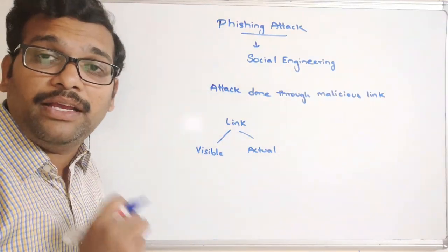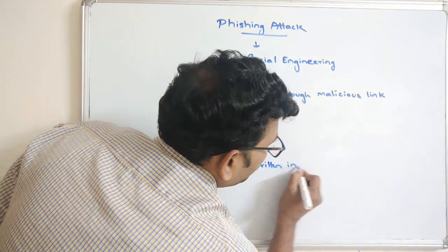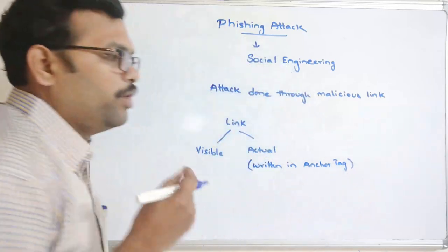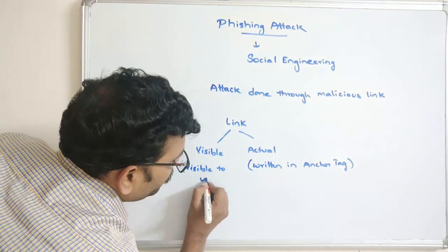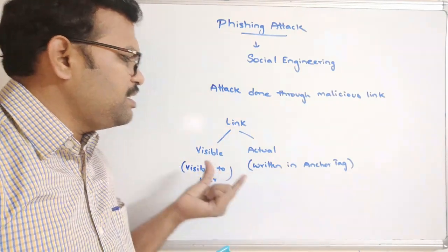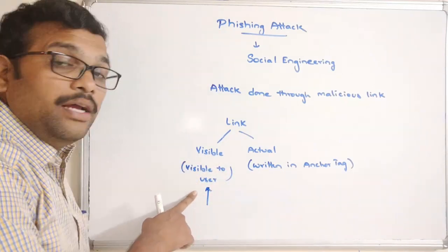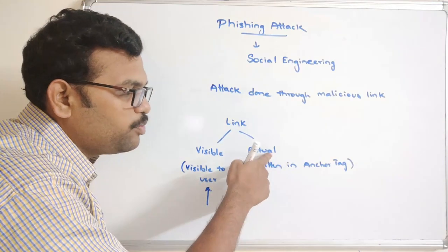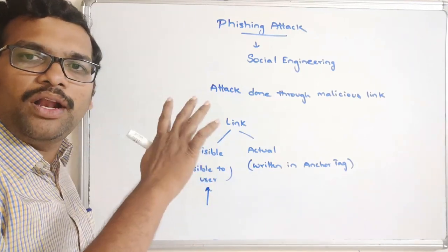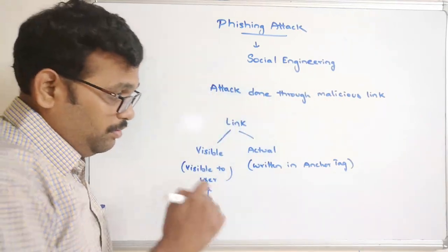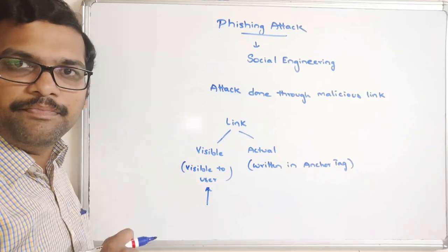The actual link is what is written in the anchor tag. In a webpage we use anchor text to create hyperlinks. The visible link is what is visible to the user. There is no synchronization between the visible link and the actual link. Once the user sees the visible link and clicks on it, the site will be redirected to the actual link written in the anchor tag. Most users don't check the URL in the address bar, and the attacker takes advantage of this to get data from the victim.